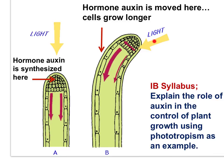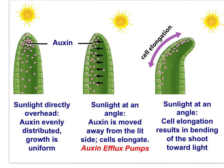But when the sun arrives at an angle, auxin concentrations are not uniform. Auxin is actively moved by pumps to the side of the stem with less light, causing cells on the shaded side of the stem to elongate. The elongation of the cells on this side causes the stem to bend toward the light. When sunlight is directly overhead, auxin is evenly distributed through the shoot, and the growth of the plant is uniform.